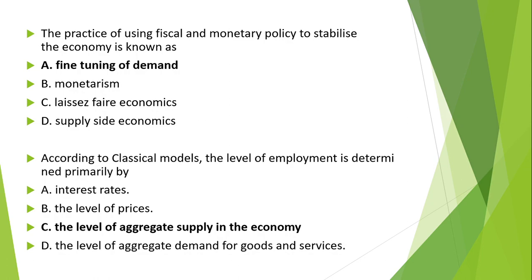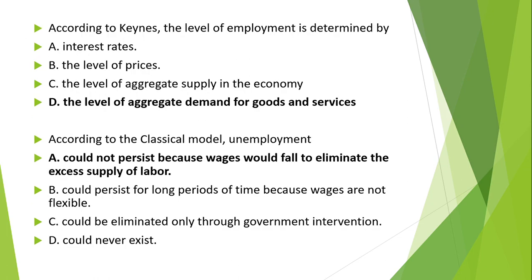According to the classical model, the level of employment is determined primarily by the level of aggregate supply in the economy — option C is correct. According to Keynes, however, the level of employment is determined by the level of aggregate demand for goods and services — option D is the correct option.